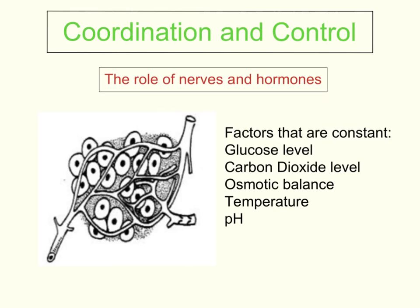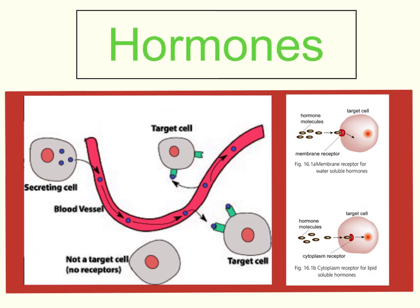The coordination of those things is controlled by nerves and hormones, which is why they are important. This slide is going to look closely at hormones, which are one of the two types of messages used in a multicellular organism.